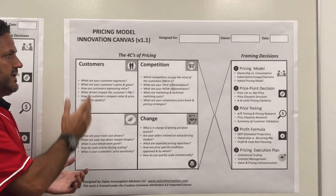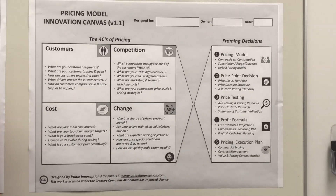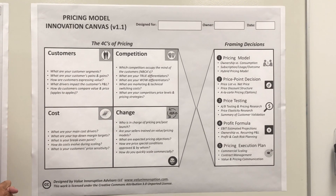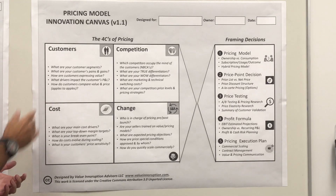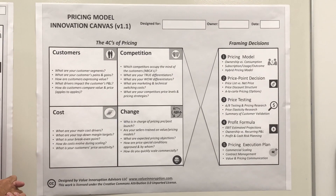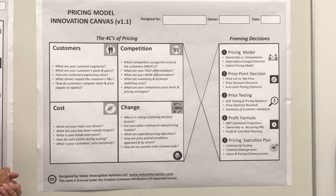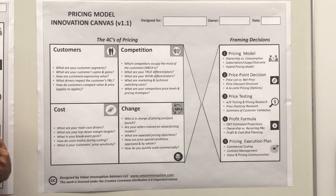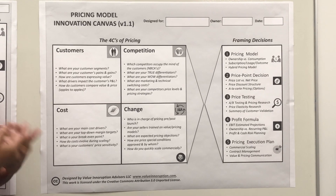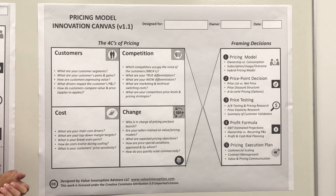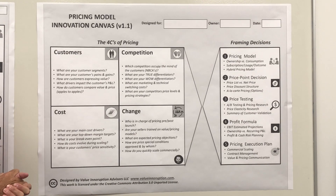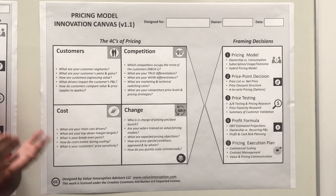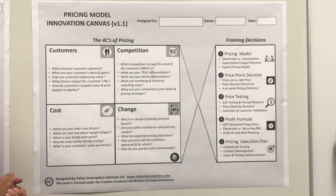Let's look at the questions you may ask yourself in detail. Each of the C's is a series of questions. On the customer side: what are the customer segments, what are your customer pains and gains, how are customers expressing value, what kind of vocabulary do they use, what drivers impact the customer P&L, and how do customers compare value and price — how do they exchange that in their mind?